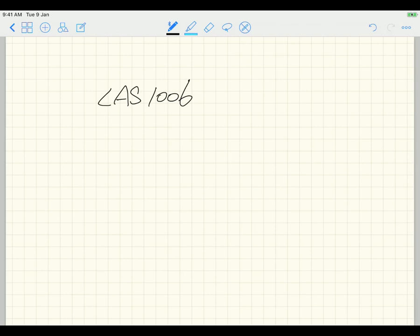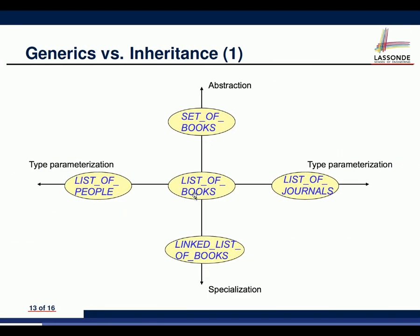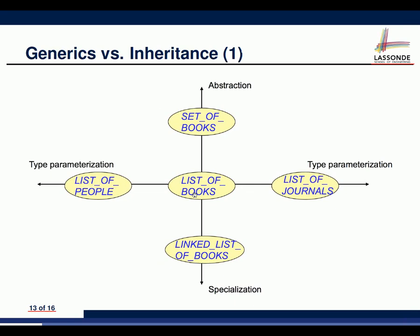I would like to go over just two slides very quickly. When you were studying for generics, you saw that there were basically two concluding diagrams to show you the difference between generics versus inheritance. You can see this particular example has two dimensions — one vertical and one horizontal.